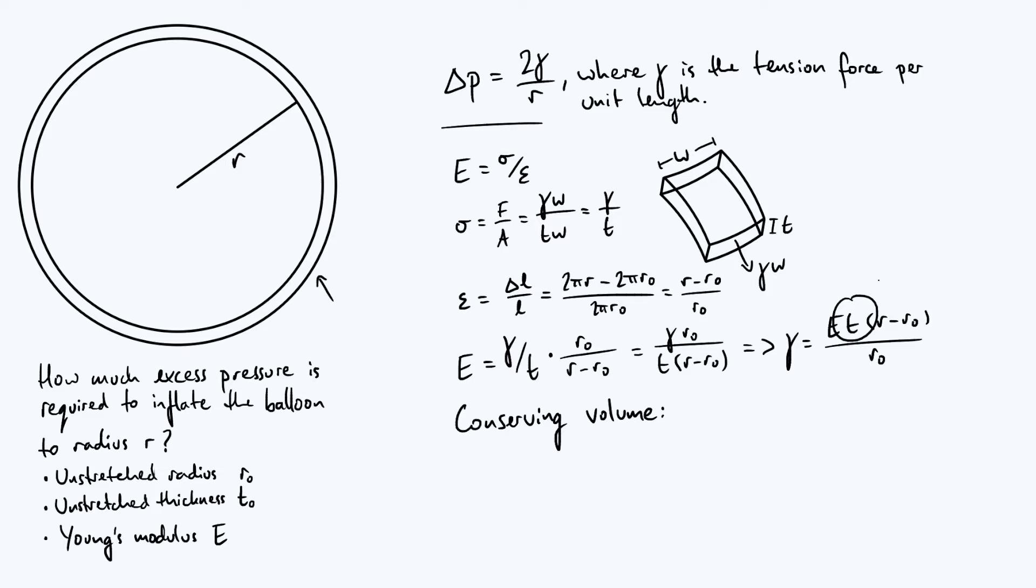Well, we can make an assumption that the volume of the skin of the balloon is conserved. So of course the volume of the balloon itself is not conserved because we're putting more and more air into it. But we only have a certain amount of solid material to work with along the surface of the balloon. We can assume that the volume of rubber itself is not changing.